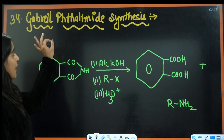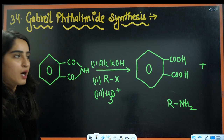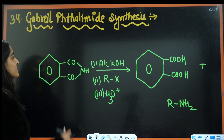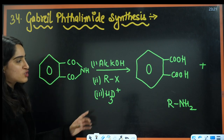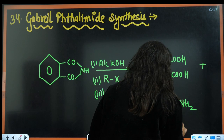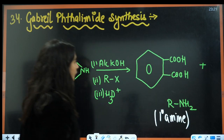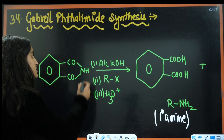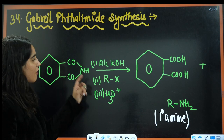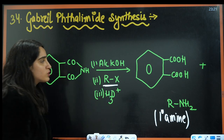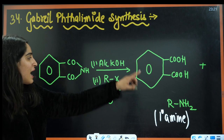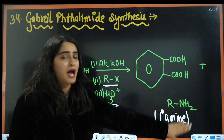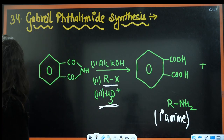Next is Gabriel phthalimide synthesis — this is only for formation of 1° amine. First, alcoholic KOH is used so that NH in phthalimide is replaced by N⁻K⁺. Then RX is added, replacing the potassium with R. After that, hydrolysis gives phthalic acid and 1° amine.